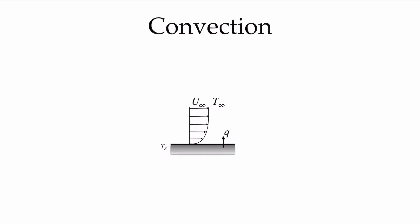Convection is the heat transfer that occurs from a solid surface to a moving fluid. If we have a solid surface at a given temperature Ts, and T infinity is lower than Ts, we'll expect a heat transfer into that fluid. Right at the surface of our solid, the velocity of the fluid above it is zero, and as such, we have conduction heat transfer into the fluid from the solid surface. As the thermal energy is conducted out into the flow, it is carried advectively by the moving fluid. That's going to result in different temperature profiles, and different flow patterns are going to result in different heat transfer rates. That is what convection is all about.